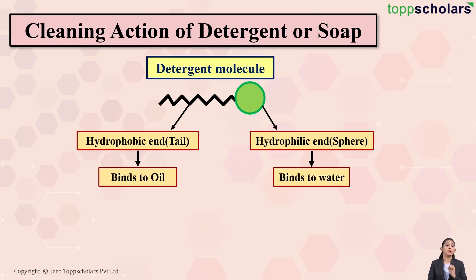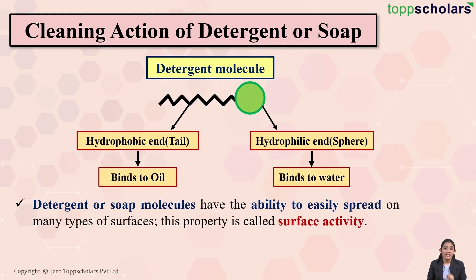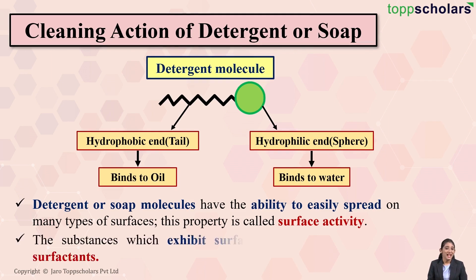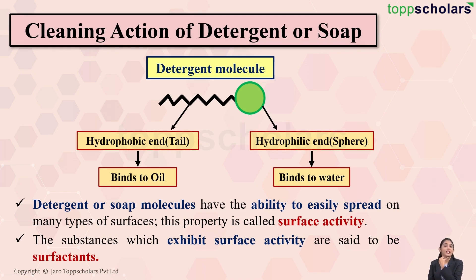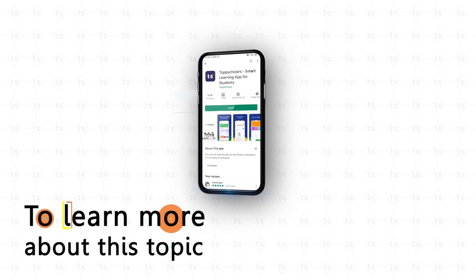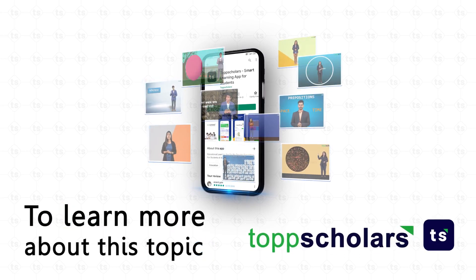Because of this ability, the detergent molecule easily spreads on many types of surfaces. This property is called surface activity, and substances which exhibit this property are called surfactants. So remember: the detergent molecule has two opposite ends — a hydrophobic tail that binds to oil and a hydrophilic head that binds to water. To learn more, download the Top Scholars app.